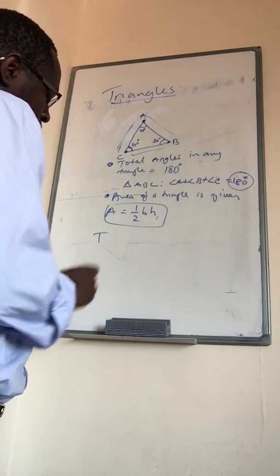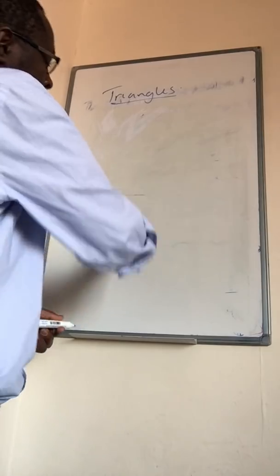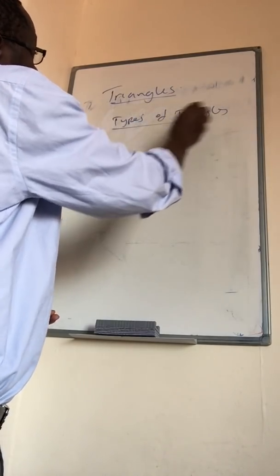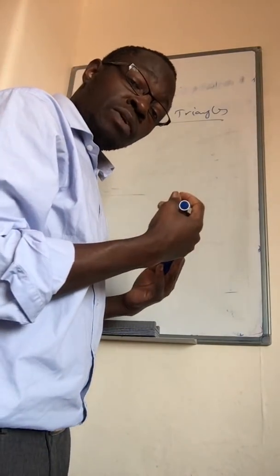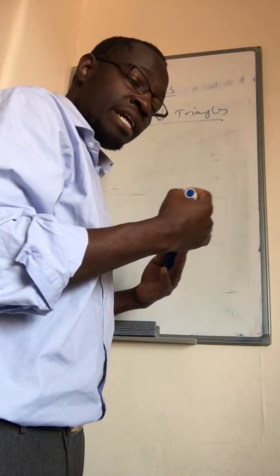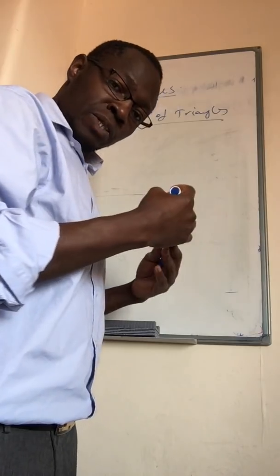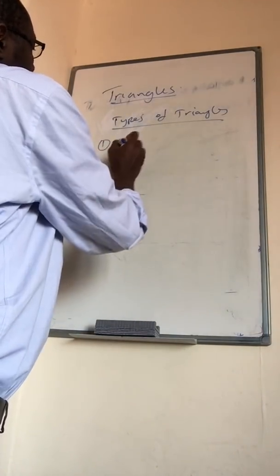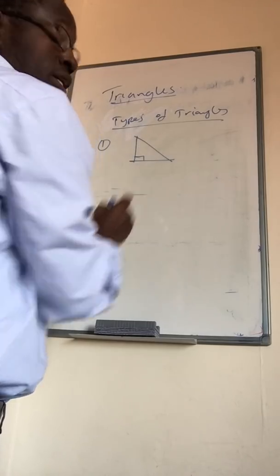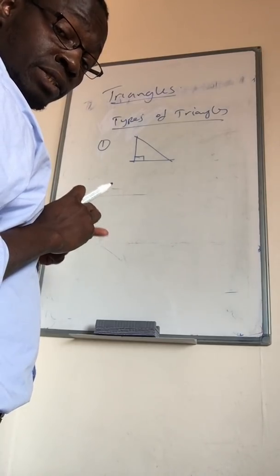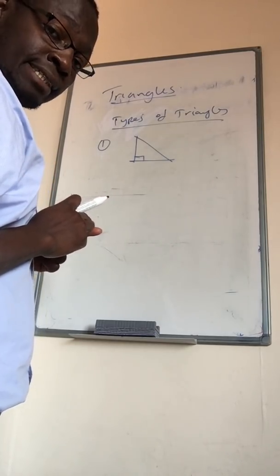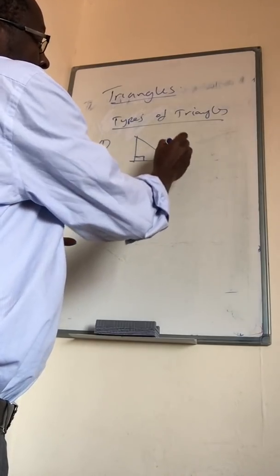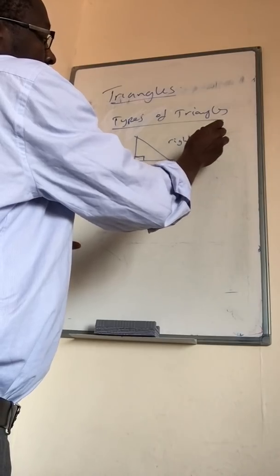Now we are going to look at the types of triangles. There are about four basic types of triangles and those types are necessary — you can try to manipulate any angles, but everything will boil down to those four types. The first one is a right-angle triangle. A right-angle triangle means two lines form a vertex at a right angle, and at that vertex we have 90 degrees.